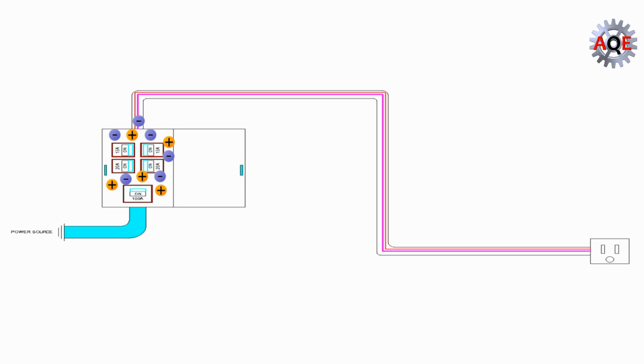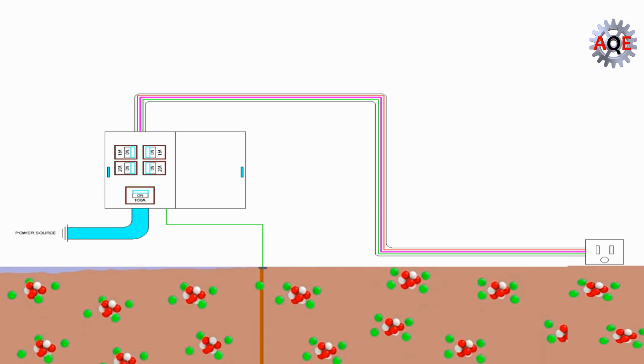However, without a grounding wire, the electricity will still be present. A grounding wire takes the electricity that has built up during the malfunction and sends it outside of your home back into the ground.